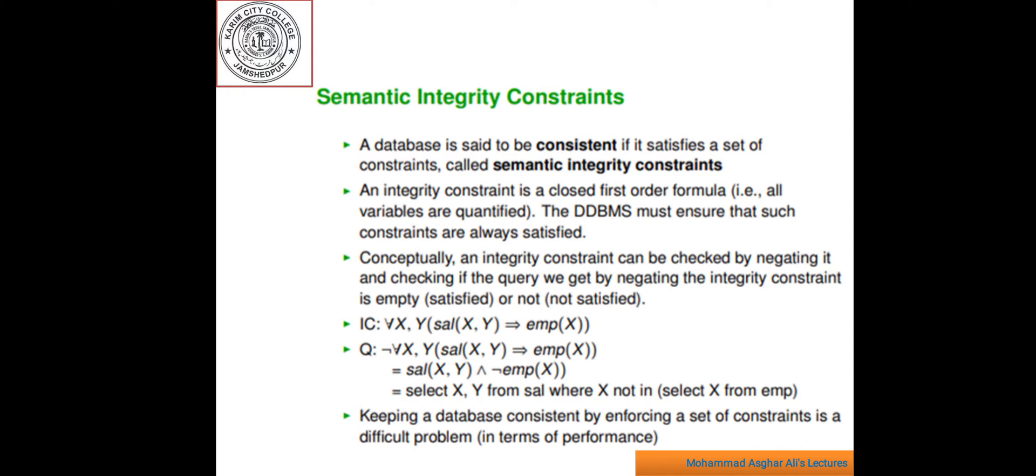Maintaining a consistent database requires various mechanisms such as Concurrency Control, Reliability, Protection, and Semantic Integrity Control. Semantic Integrity Control ensures database consistency by rejecting update programs which lead to inconsistent database state or by activating a specific action on the database state which compensate for the effect of the update programs.